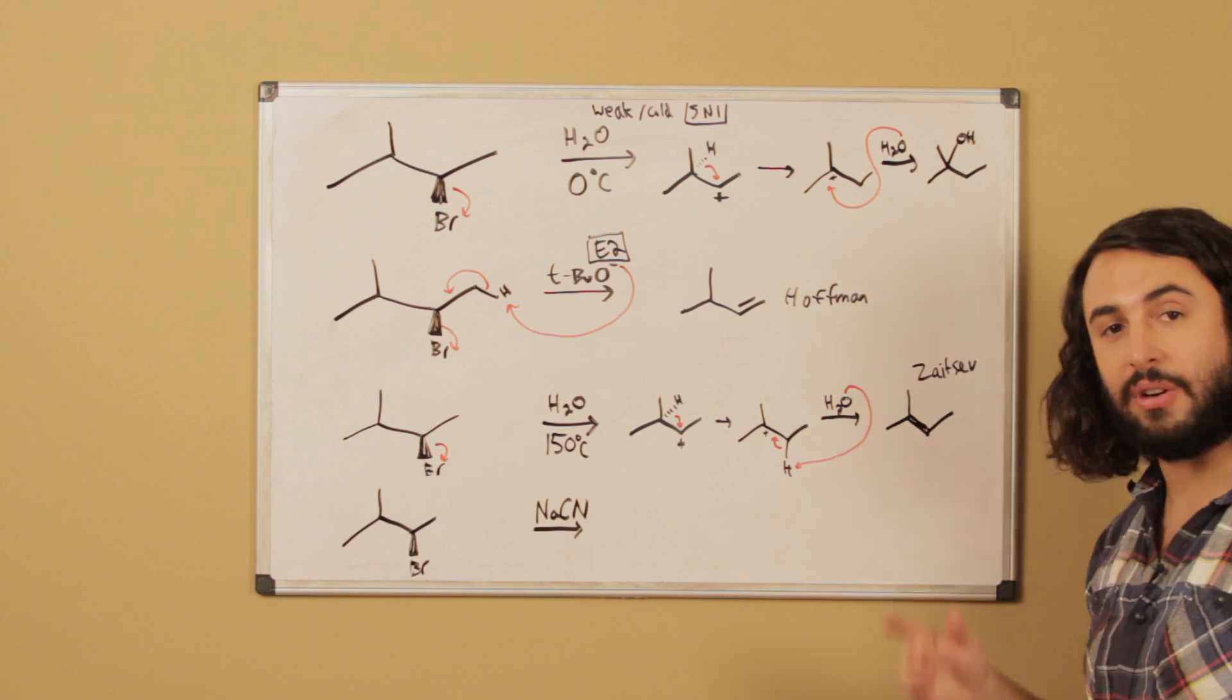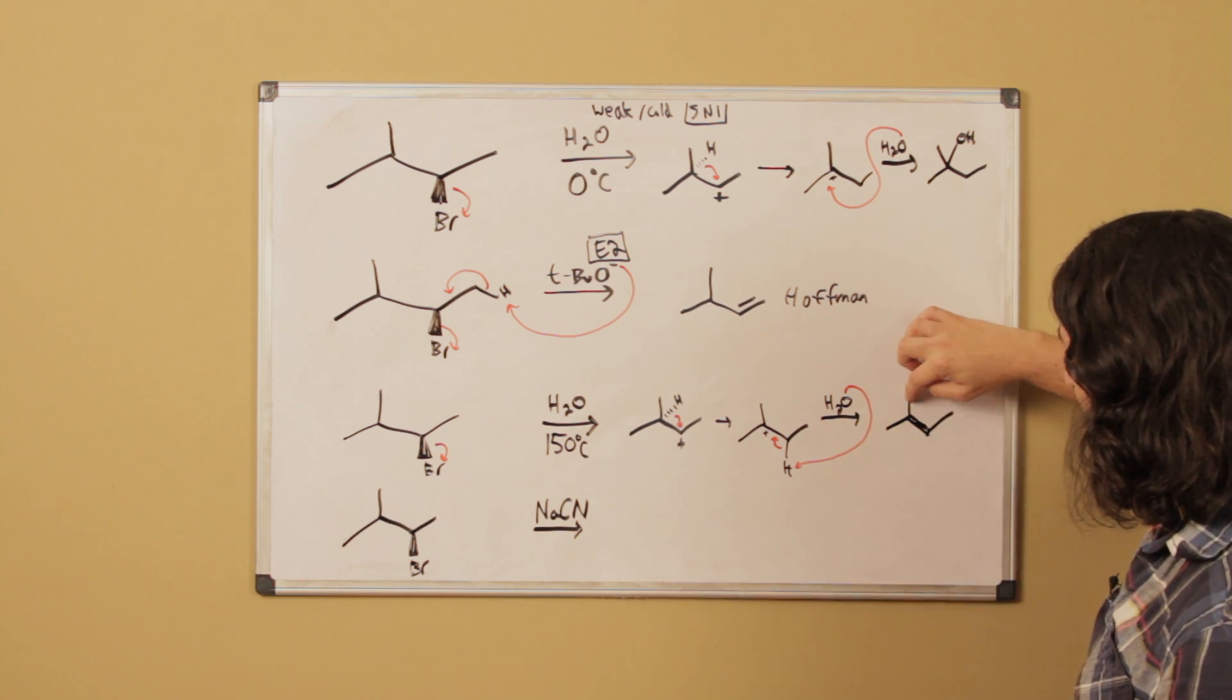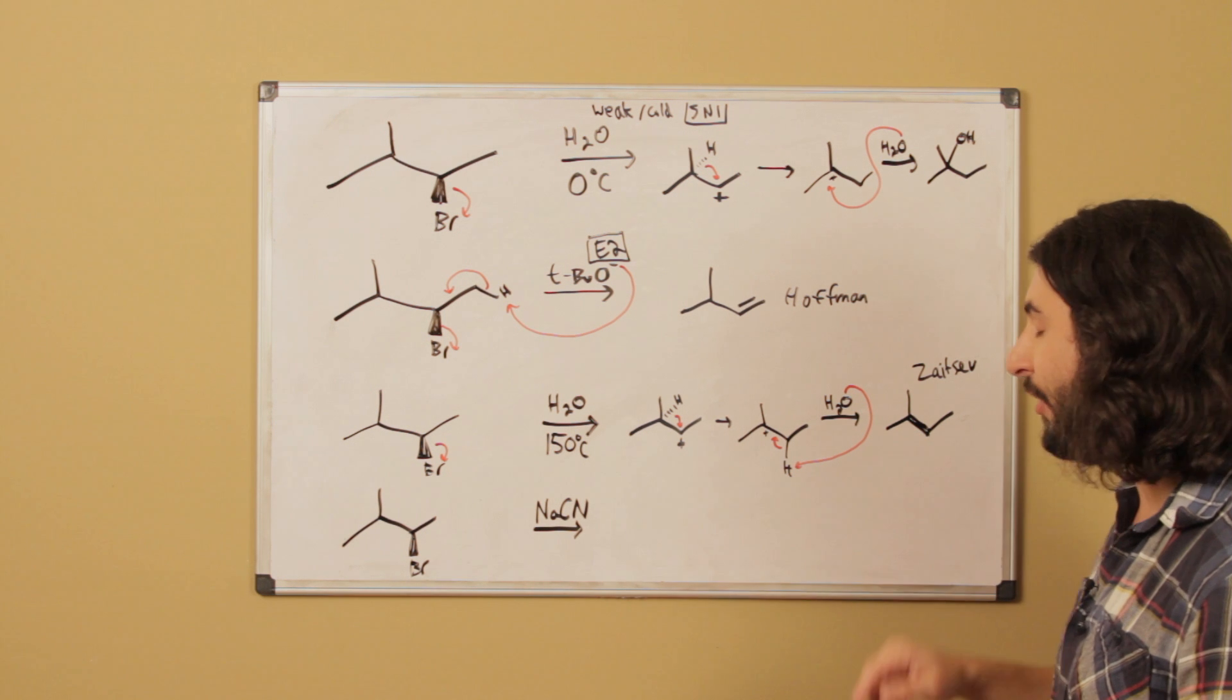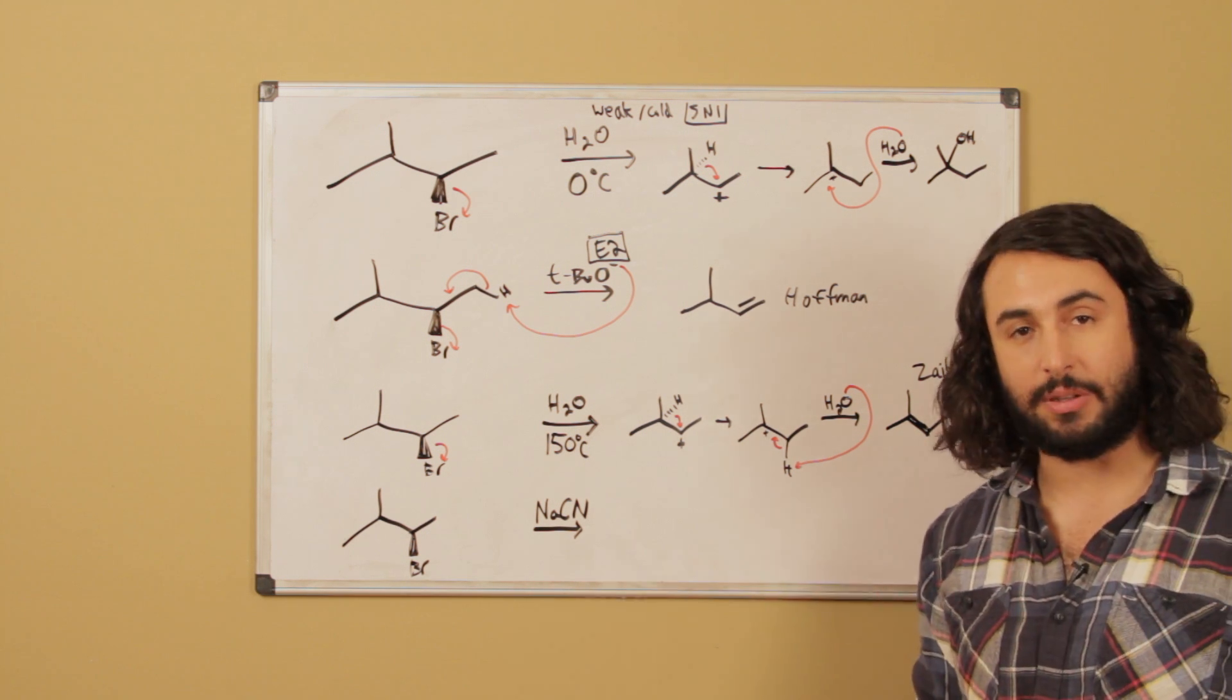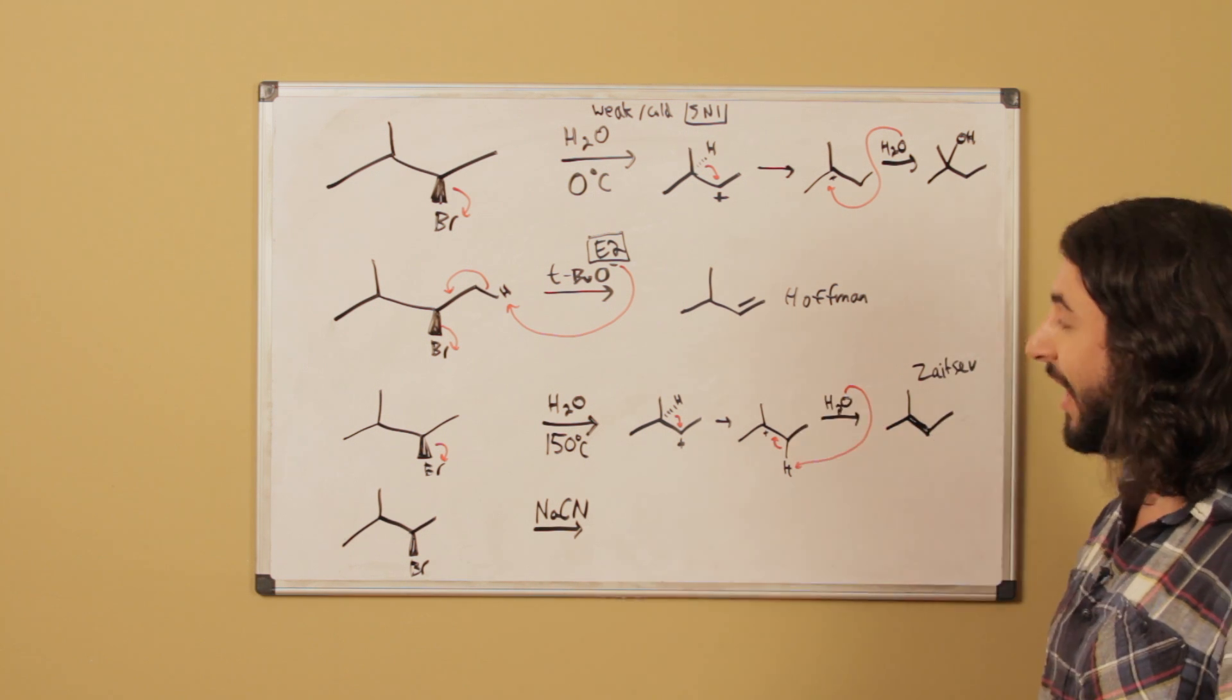So that is the more substituted of the possible alkenes. We could have had the double bond there or there, but instead we have it there because that is a tri-substituted alkene as opposed to a possible di-substituted alkene. So there is our E1 product.